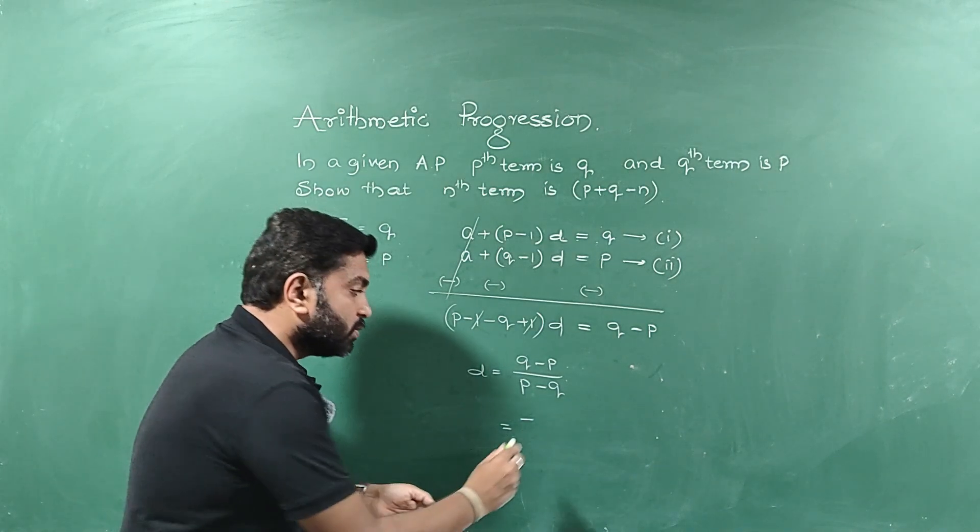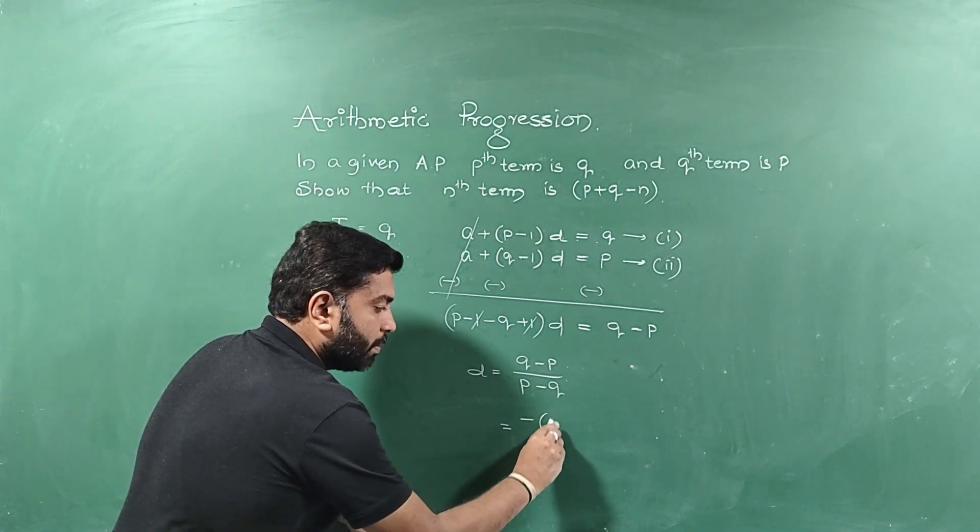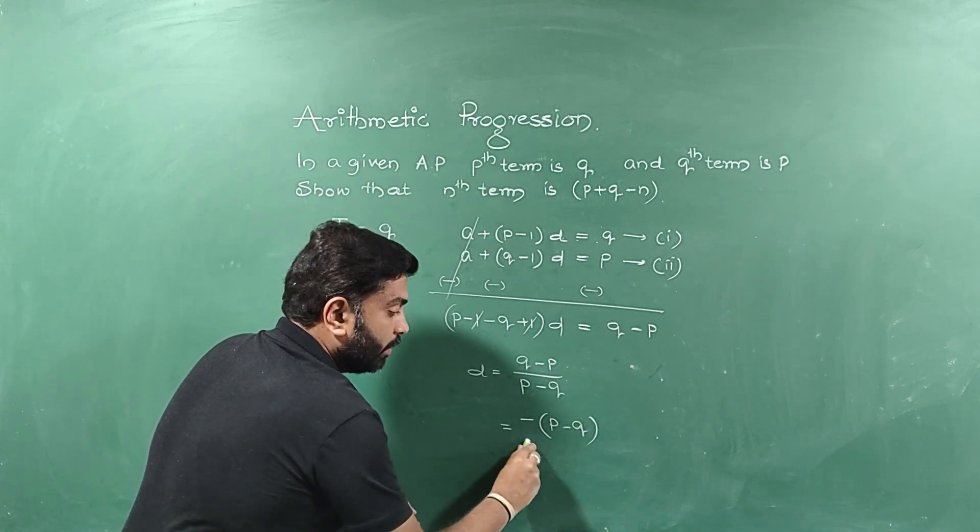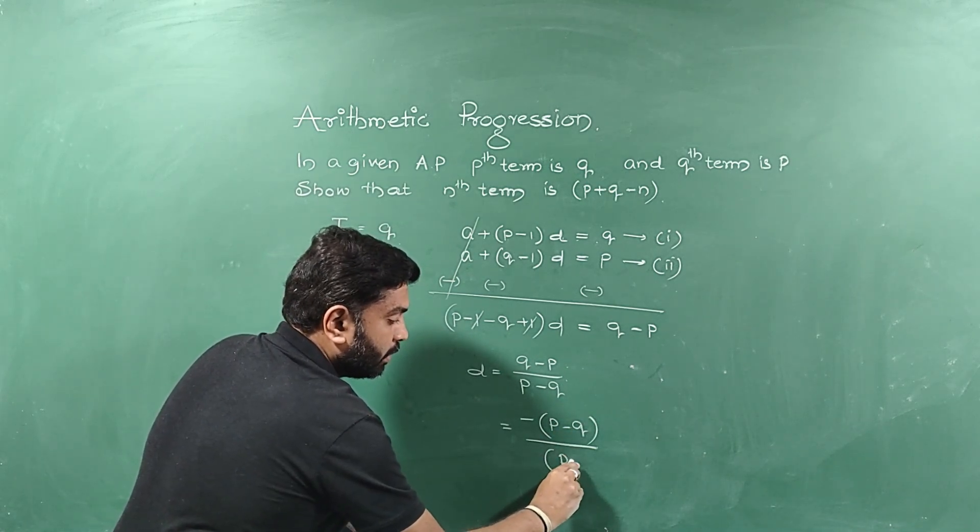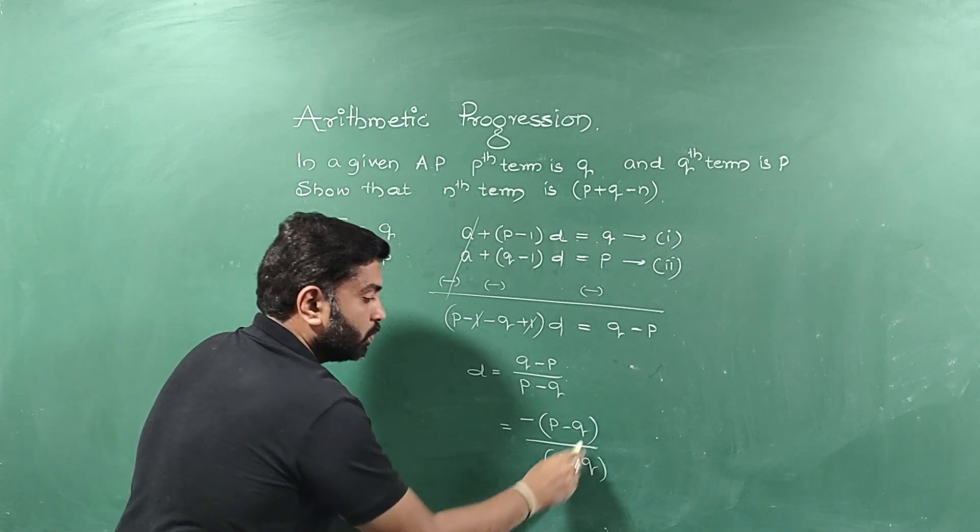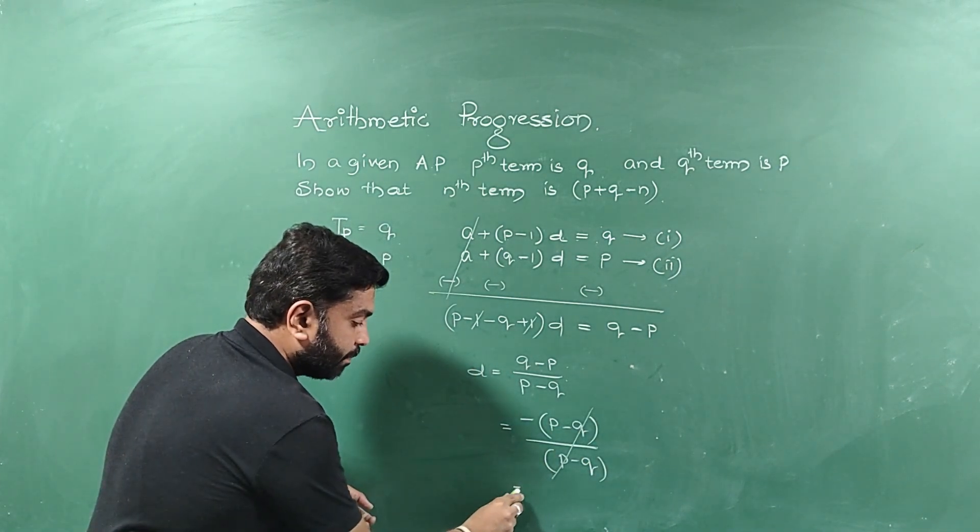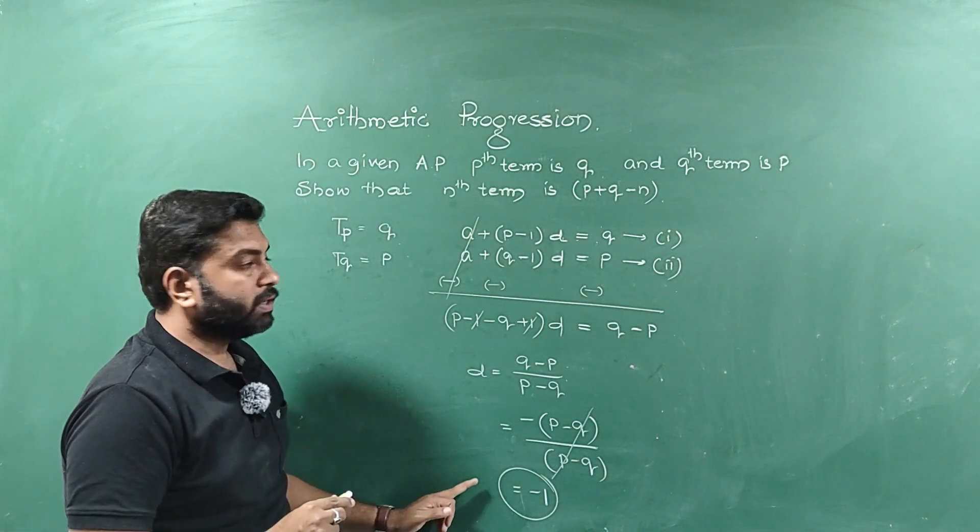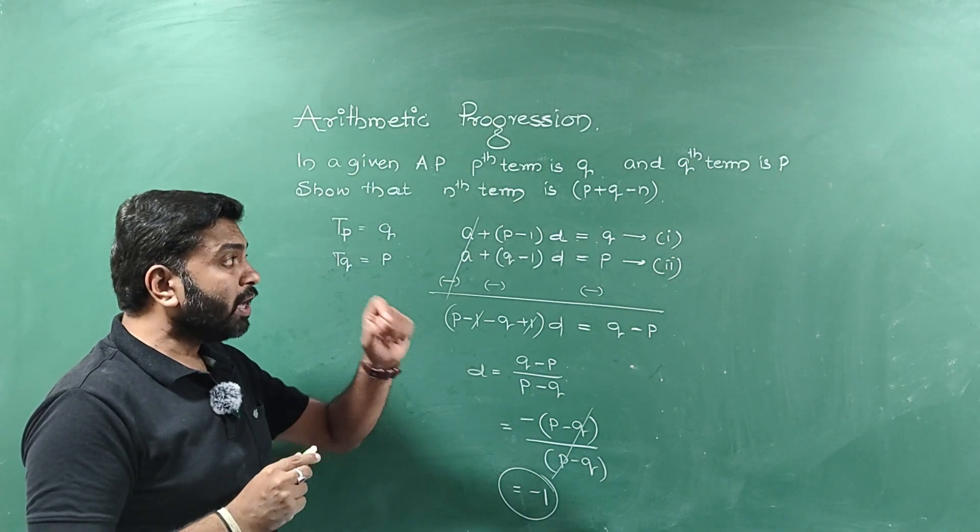So I can take the minus term out from the numerator. If I take minus out, minus P becomes plus P and plus Q becomes minus Q divided by P minus Q. So both the terms get cancelled. What is remaining? Minus 1. So this is the value of D.